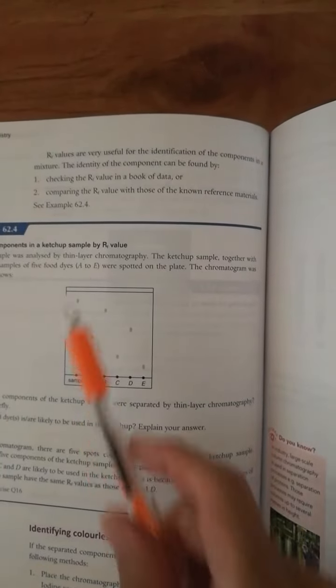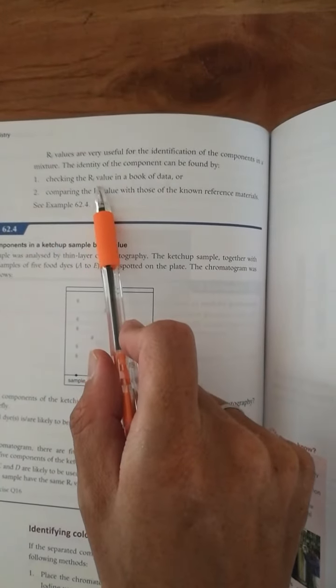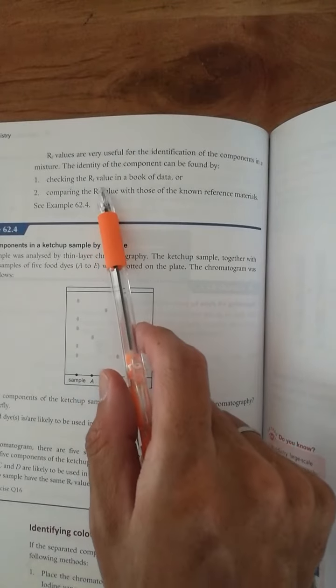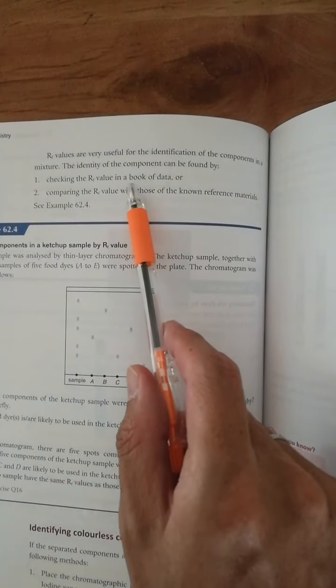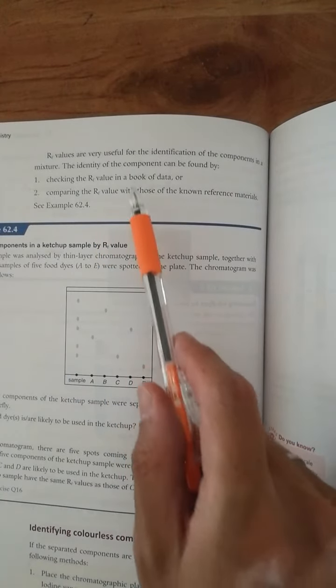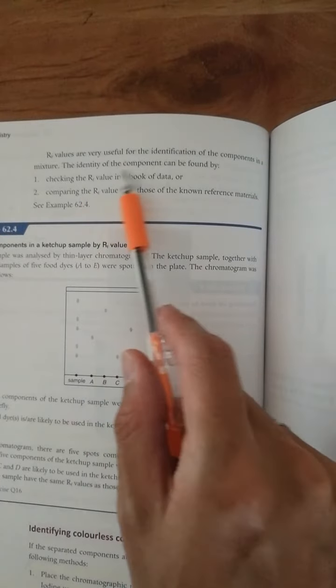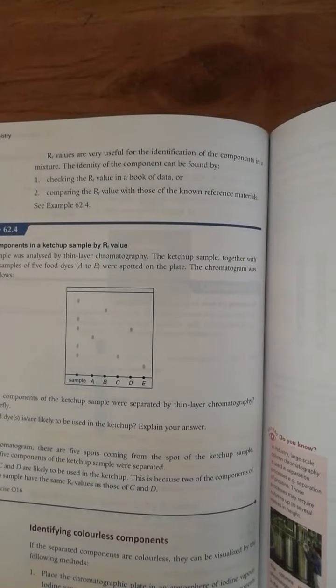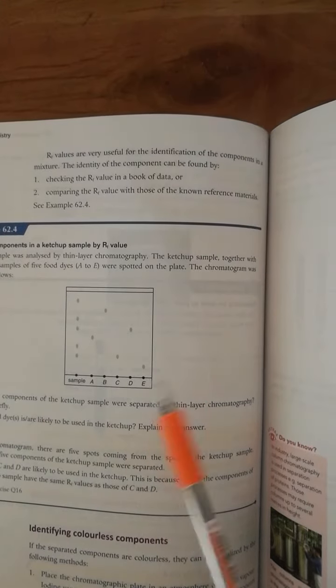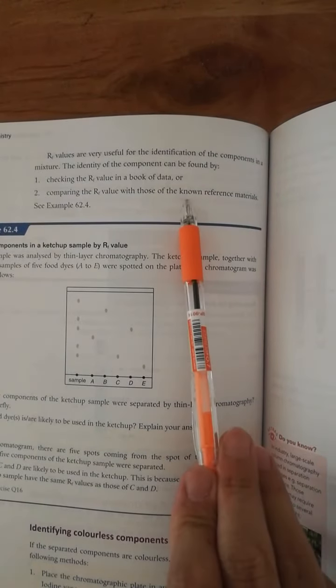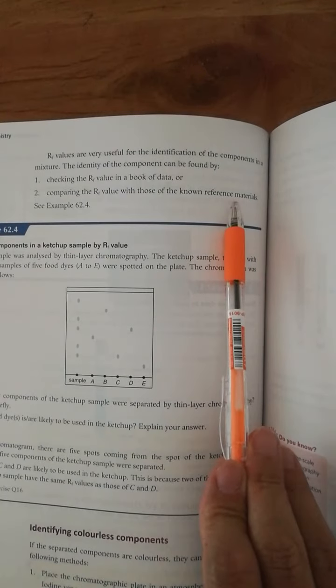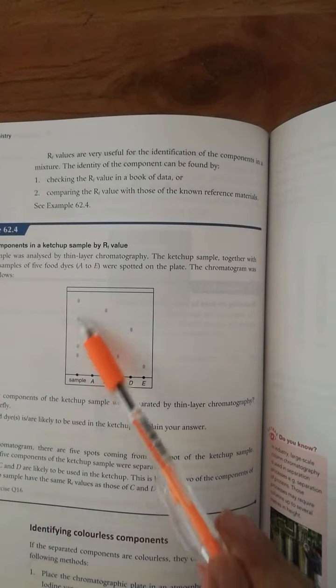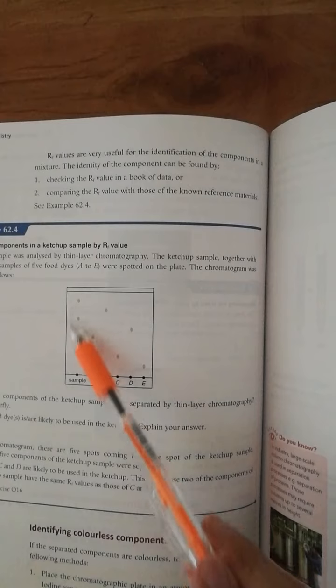Checking the Rf value with the aid of a data book is one way to identify your component in the mixture. Sometimes we can use known reference materials. For example, we have an unknown sample which